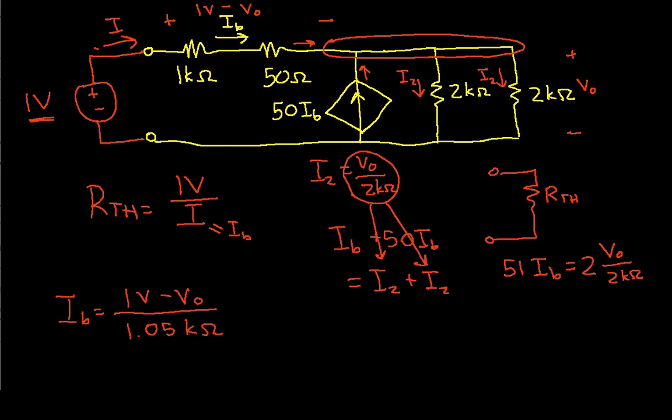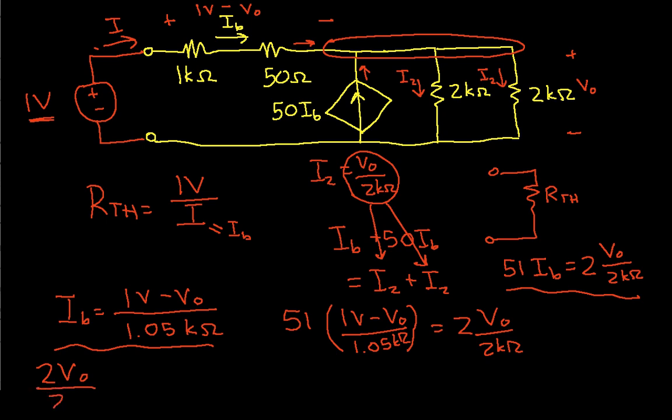So now we can combine this equation and this equation to get the following. 51 times I sub B, which is 1 volt minus V0 over 1.05k ohms is equal to 2 V0 over 2k ohms. And we can solve this equation for V0. When we do that, we get 2 V0 over 2k ohms plus 51 V0 over 1.05k ohms is equal to 51 over 1.05k ohms.